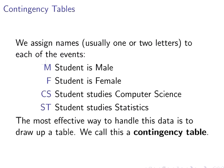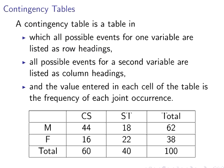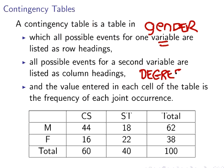The most effective way to handle this data is to draw up a contingency table. A contingency table is where all possible events for one variable are listed as row headings — in this case, gender, with events male and female — and the events for a second variable are listed as column headings, in this case degree program. The arrangement could also be reversed.